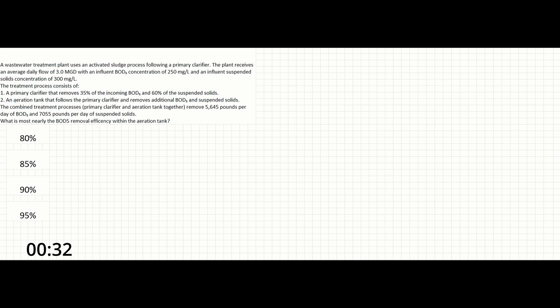An aeration tank follows the primary clarifier and removes additional BOD5 and suspended solids. The combined treatment processes of the primary clarifier and aeration tank together remove 5,645 pounds per day of BOD5 and 7,055 pounds per day of suspended solids. What is most nearly the BOD5 removal efficiency within the aeration tank?